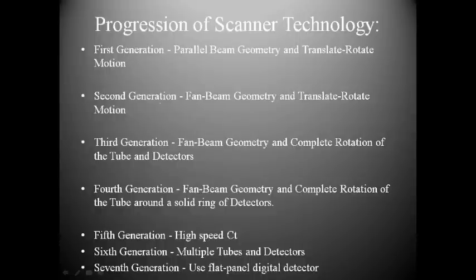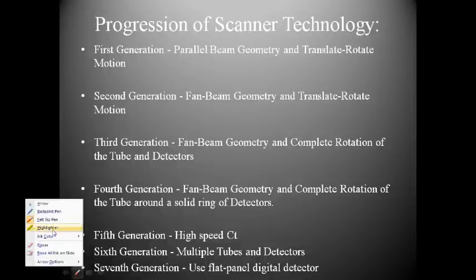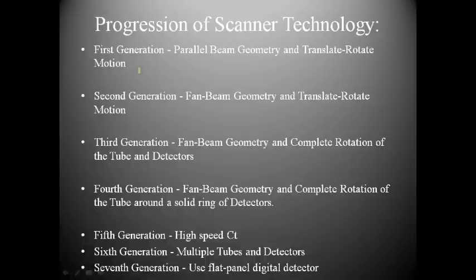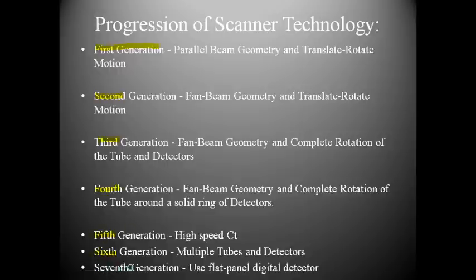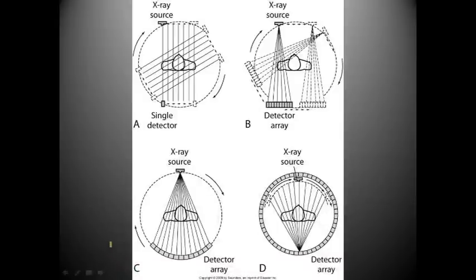We can't be naive to think we've always had the rapid, excellent-image scanners we have today. There have been several generations of CT scanners: 1st, 2nd, 3rd, 4th, 5th, 6th, and 7th generation scanners, each representing improvements over the previous.